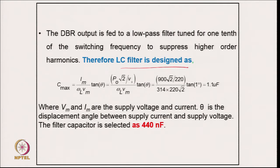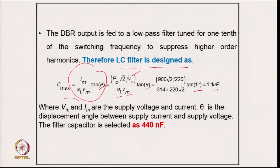An LC filter is designed where the capacitor is calculated from the relation C_max = I_m / (V_m × ω_l × tan θ), where θ is the angle between supply voltage and current, taken as 1 degree to avoid reactive power burden. Putting in the values of output power, supply RMS voltage, peak voltage, and supply frequency gives approximately 1.1 μF. The capacitor is selected slightly lower at 440 nF.